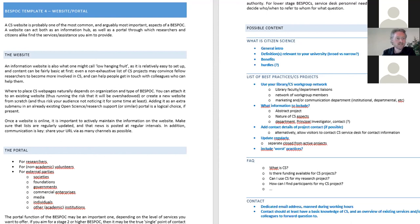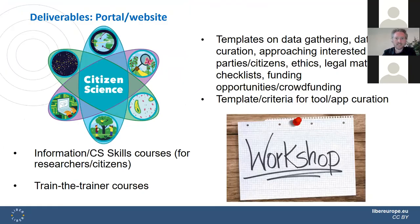We have created several such templates that a university can use. The information in them serves as general pointers — things to keep in mind when creating a website for your single point of contact. Additional deliverables we would like to create in the coming months include templates on data gathering, data curation, information content, approaching interested parties and citizens, ethics, legal matters, checklists, and criteria for tool or app curation. If so inclined, a university might even consider creation of a tool or app that actually helps citizen science.